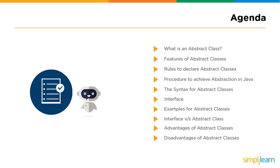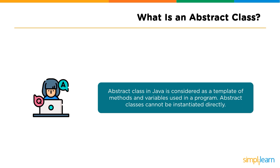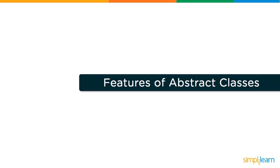Our first topic: what is an abstract class? Abstraction is one of the keys to achieving an object-oriented programming approach and designing software. The programmer tries to hide the complicated implementation of the code. The user isn't interested in how the code is implemented, so through abstraction we hide it using an abstract class or an interface. An abstract class in Java is a template of methods and variables used in a program, and it cannot be instantiated directly.